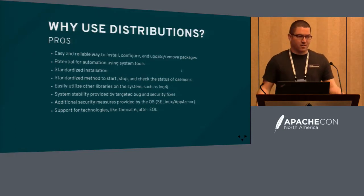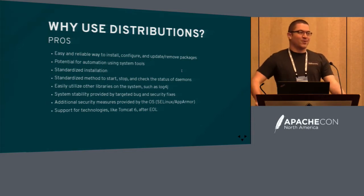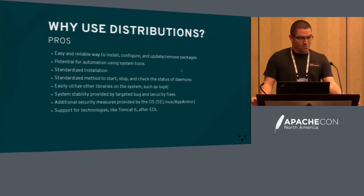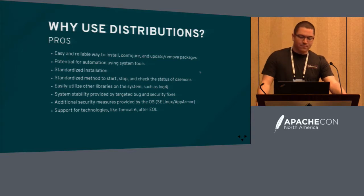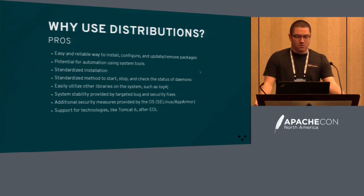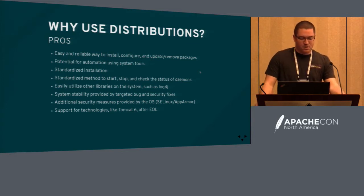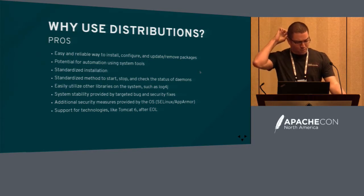Why use distributions? I'll break this down into a list of pros and cons. Using Tomcat from a distribution isn't a popular method for most ASF members — everybody tries to drive customers to using the ASF distribution, which removes potential problems inside the Linux distribution. Here are some pros: packaging Tomcat from a distribution makes it easy to install and maintain. You can install the packages just like anything else instead of going to the internet and downloading it. The distribution also tests Tomcat with all the other libraries it provides — like Log4j, for example.